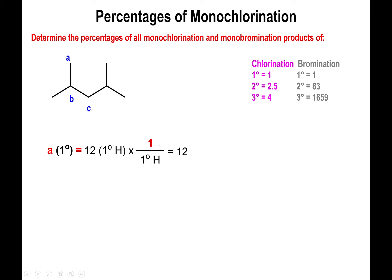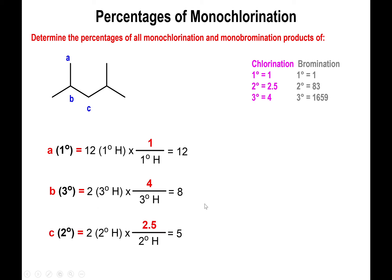I'm basically using this as a straightforward conversion: the number of that type of hydrogen multiplied by its relative rate. So 12 primary hydrogens times a rate of 1 gives us 12. We do the same thing with type B. Type B is a tertiary carbon, and we have two total hydrogens of type B in the molecule. We multiply those two tertiary hydrogens by the relative rate of 4 — tertiary hydrogens react four times as fast as primary — giving us a value of 8. Type C is a secondary carbon, and we only have two Hs on that carbon. Two secondary hydrogens multiplied by a relative rate of 2.5 gives us 5.